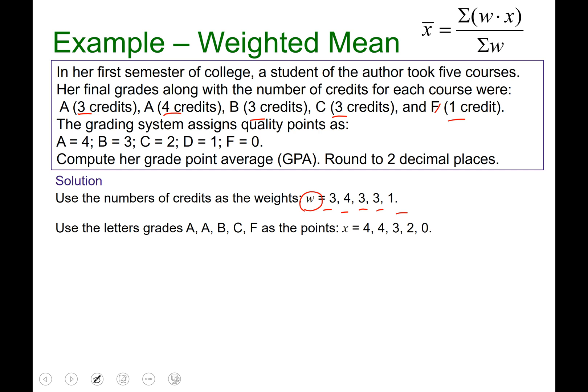Our x's are the point values assigned to our letter grades. So we had A, A, B, C, F. That's why we see four, four, three, two, zero. Four, four, three, two, zero.